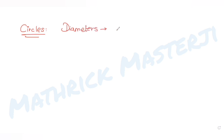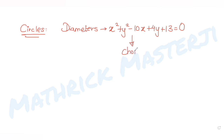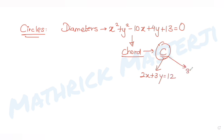Today's question is from the topic of circles. The question tells us that one of the diameters of a circle whose equation is x² + y² - 10x + 4y + 13 = 0 is a chord of another circle C, whose center is the point of intersection of the lines 2x + 3y = 12 and 3x - 2y = 5.